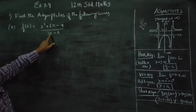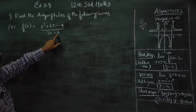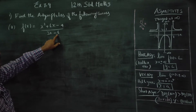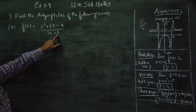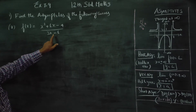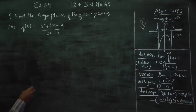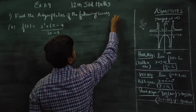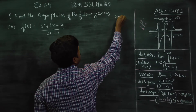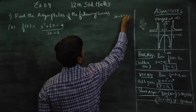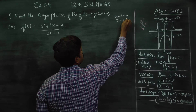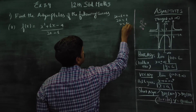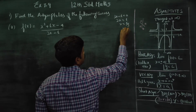First of all, set 3x - 6 = 0. Then 3x = 6, so x = 6/3, which gives x = 2.